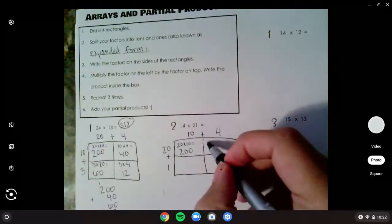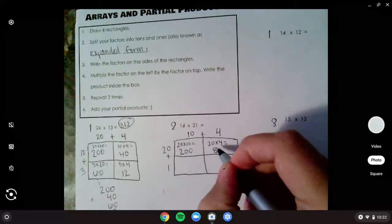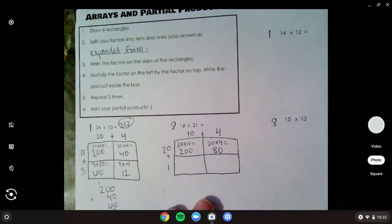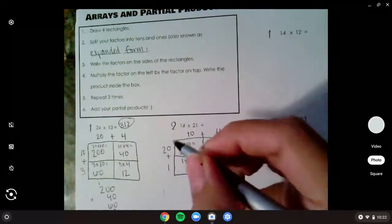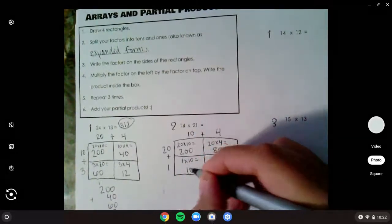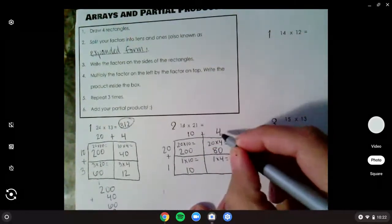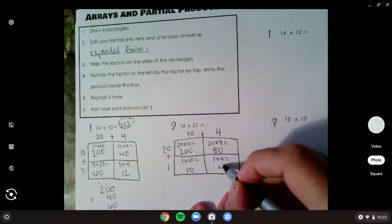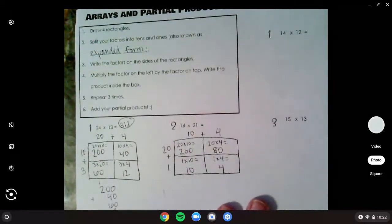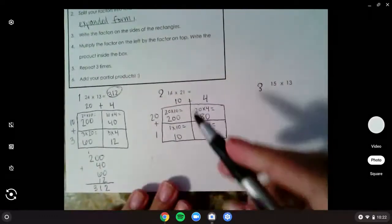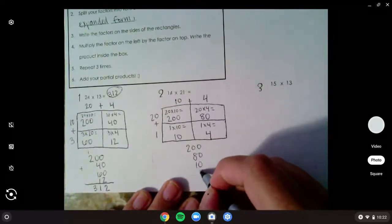And we keep going. 20 left times top, 4. 4 times 2 is 8. And add one zero is 80. Number on the left, 1 times the number up top is 10. 1 times 10, 10. And I take the number on the left, 1 times the number on top, 4, 1 times 4 is 4. I repeat it. Now I add my partial products. Now I have 200, I have 80, 10, and 4.